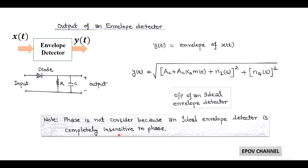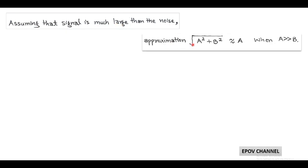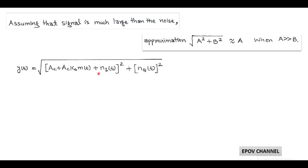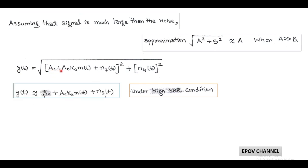For convenience, we assume the signal is much larger than noise. We use the approximation: √(A² + B²) ≈ A when A >> B. This is known as the high signal-to-noise ratio condition. Under this condition, Y(t) ≈ AC + AC·KA·m(t) + NI(t).